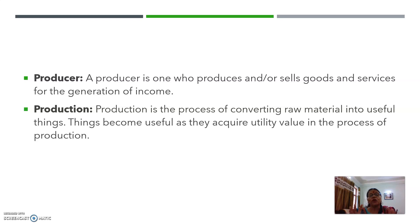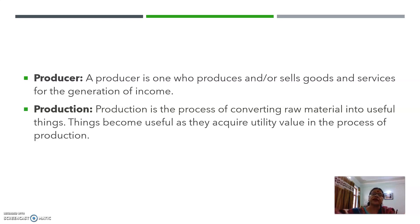A producer is one who produces and sells goods and services for the generation of income. Producer वो है जो goods and services को produce करता है, या sale करता है, या दोनों काम करता है। Production is the process of converting raw material into useful things; things become useful as they acquire utility value in the process of production.